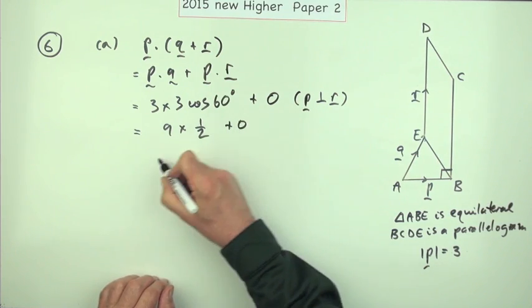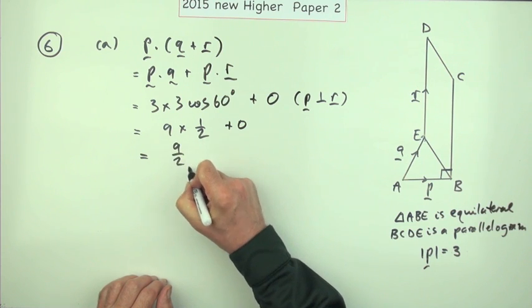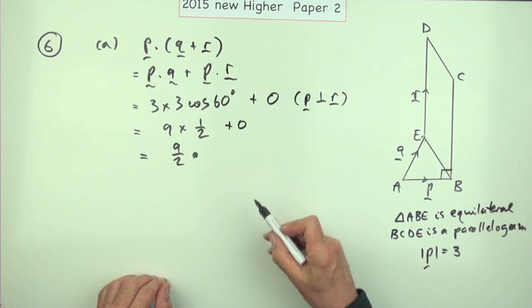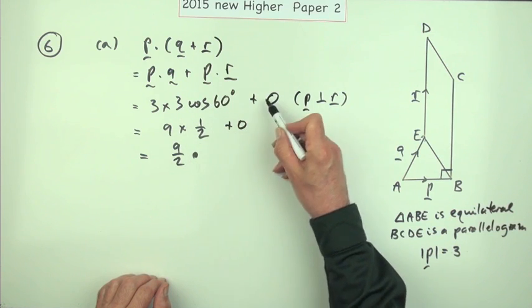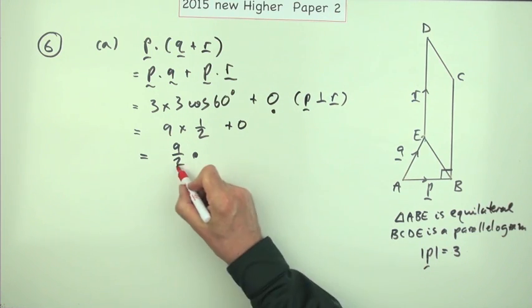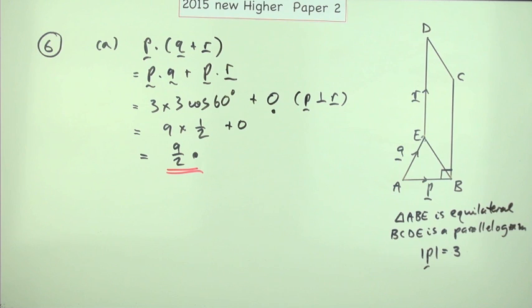So it's that plus the zero which is 9 over 2. Now that's the mark, and the other mark was for adding this zero onto that product there, so I'm just going to put it here for adding zero on to it. For three marks, there you go then.